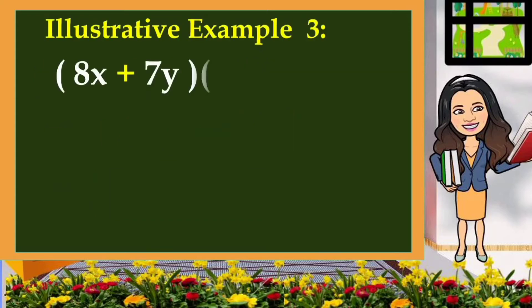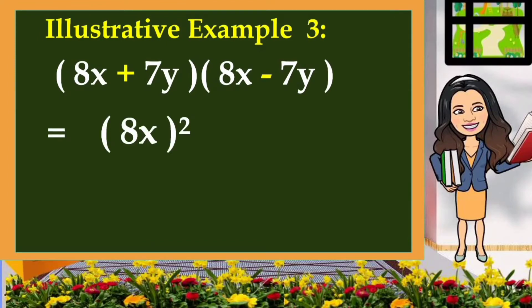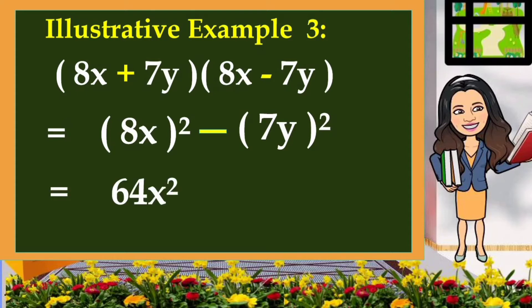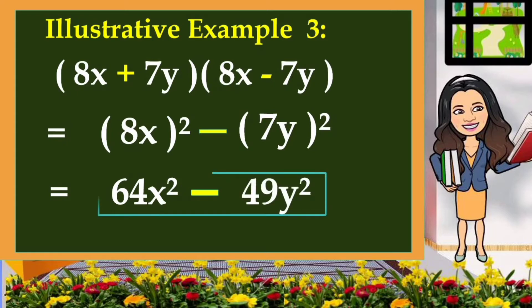Another example: the quantity 8X plus 7Y multiplied by 8X minus 7Y. Same process — we square the first term minus the square of the last term. The square of 8X or 8X times 8X is equal to 64X squared. Minus the square of 7Y or 7Y times 7Y is equal to 49Y squared. So, 64X squared minus 49Y squared is our result.